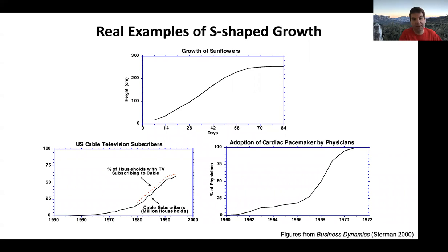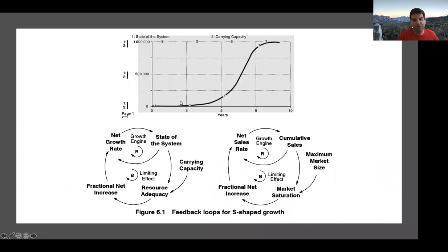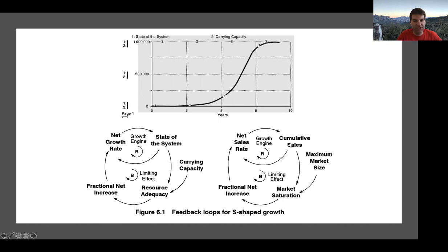We've seen S-shaped growth before in the fisheries case from chapters 1 and 2, where fish grow until they reach an inflection point and eventually reach a carrying capacity. I've shown two causal loop diagrams beneath this S-shaped growth curve that have the exact same dynamics, though slightly different words. On the right we see a concrete example of a growth engine — say sales of an iPhone or a pacemaker — that has a growth engine powering growth but ultimately a limiting effect driven by market saturation.